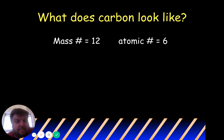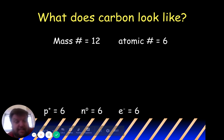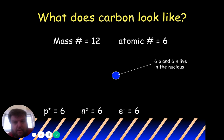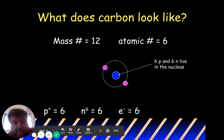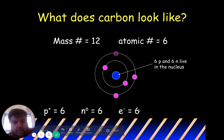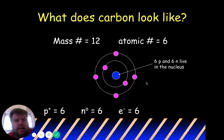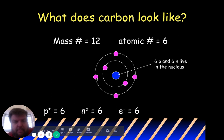What does carbon look like? Carbon has a mass number of 12 and an atomic number of six. It has six protons, six electrons, and 12 minus six gives us six neutrons — all in the nucleus. The first ring holds two electrons, leaving four electrons for the outer ring — one, two, three, four — giving us six total. How many valence electrons does carbon have? If you said four, you're correct, because on the outermost ring there are four valence electrons.